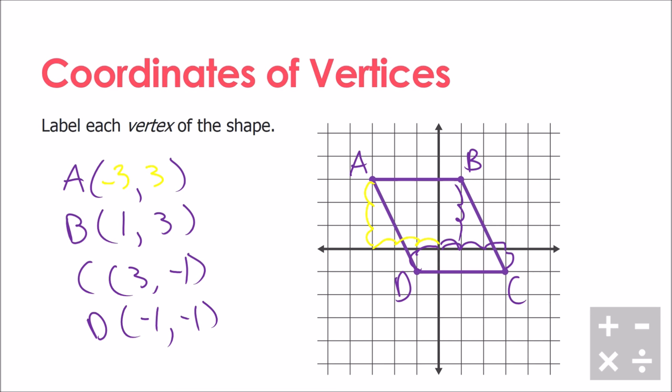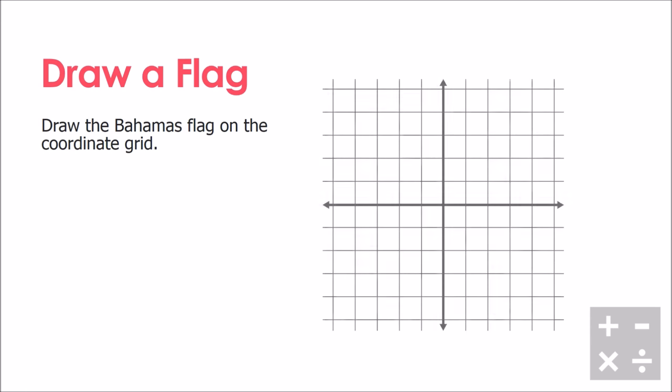Now we've labeled each vertex of this shape and completed this question. Here we're going to be asked to draw flags. We're actually going to draw a flag using our knowledge about coordinates and points. We're going to draw the Bahamas flag on the coordinate grid. Here's our coordinate grid, here's what the Bahamas flag looks like.